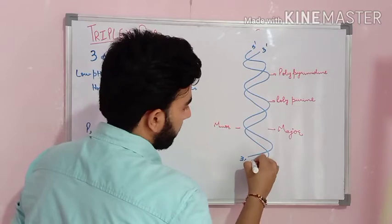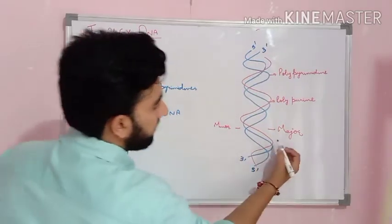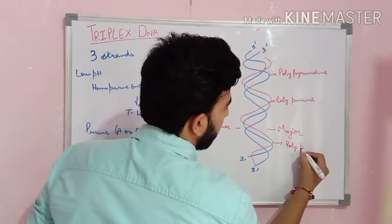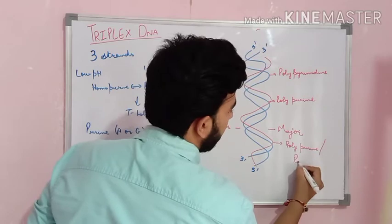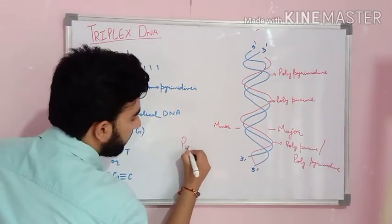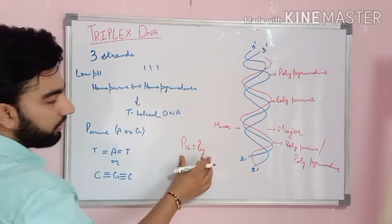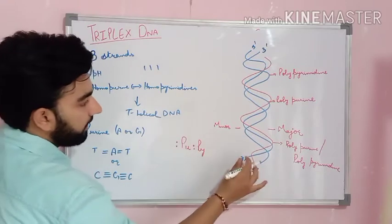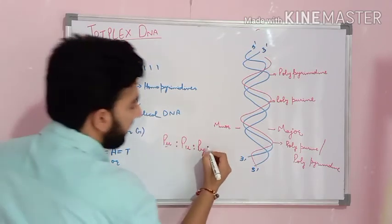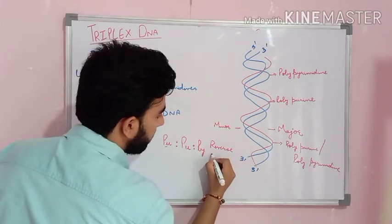The third strand, which is either made up of poly-purine or poly-pyrimidine, combines along the major groove. The bond forms will look like purine to pyrimidine. If the third strand — shown in red — is a purine strand, then the structure formed will be in a reverse or anti-parallel arrangement.